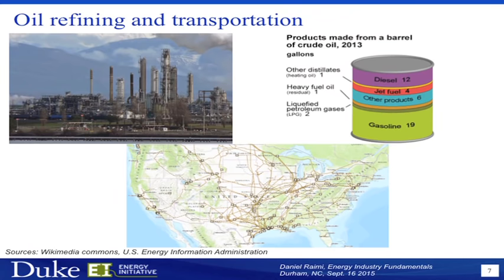The next step in the oil and gas system is refining and transportation. After crude is produced, it's transported by pipeline, by rail, by truck — all sorts of different ways — to a refinery where it goes through a variety of processes to produce the fuels we're familiar with today. The primary product of crude oil is typically gasoline, as well as diesel and jet fuel along with a few other products. This varies by the type of crude oil — different types tend to produce more heavy chemicals. So again, there's a spectrum of oils and gases that produce different products.